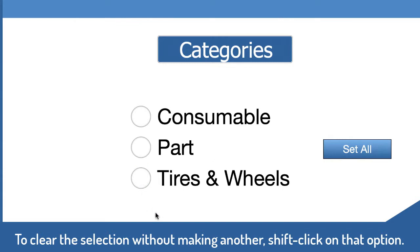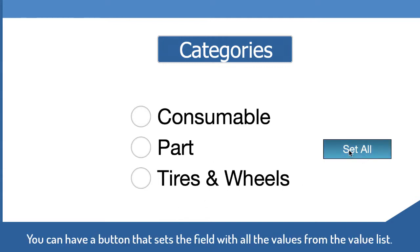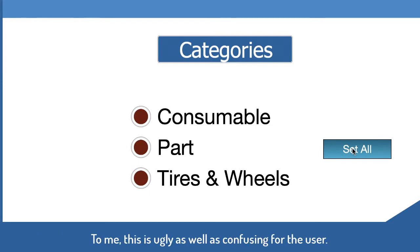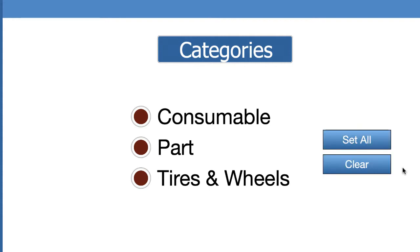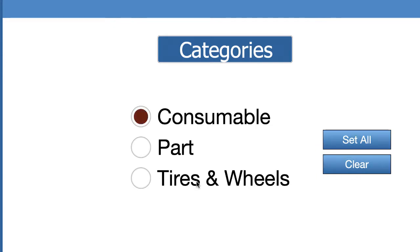If you want to clear this field, you have to hold the shift key down and click on the selector to clear it. A lot of people don't know that. You can also set a button to clear all the values, but in my opinion that's ugly and confusing, since people know a radio button should only have one value. Adding a button simply sets the field — which was called G category — to nothing.